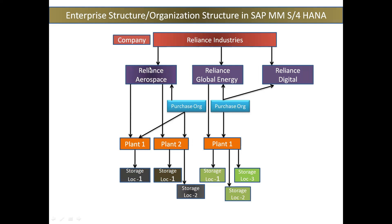This is what we talked about with Reliance Aerospace. Now in the same way, when we talk about Reliance Global Energy and Digital, maybe they have only one purchase department and from there they are procuring material for both companies. They have only one plant, and within this plant, they have a total of three storage locations. These three storage locations are enough to store all the materials required for plant one for both companies.